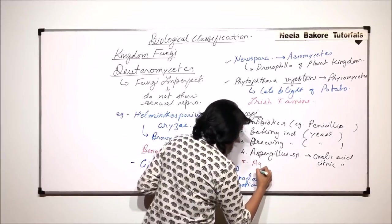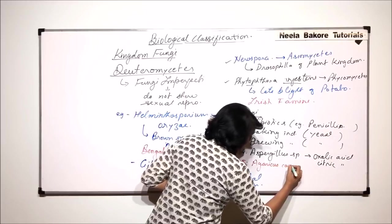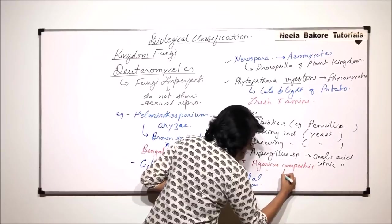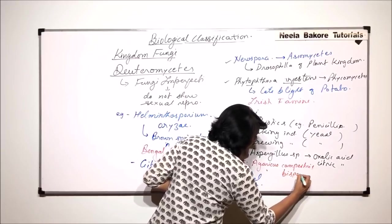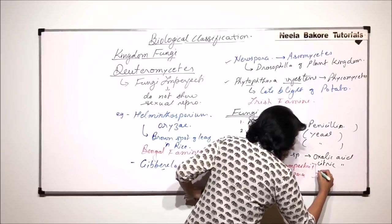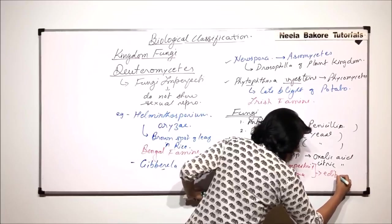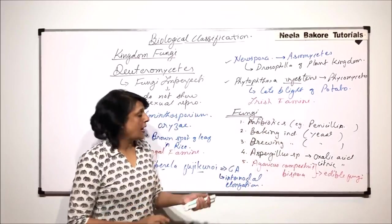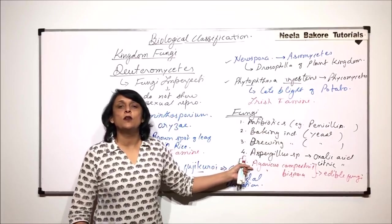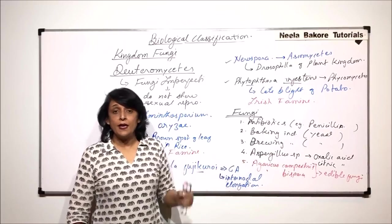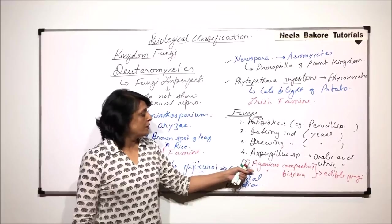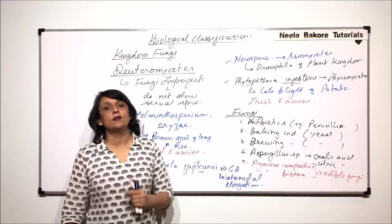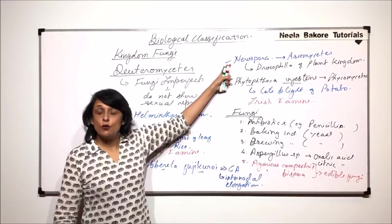For example, Agaricus campestris and Agaricus bisporus. These are the edible fungi which we commonly call the mushroom. This is very good because the nutritive value and the mineral content is very high. So fungi are used for various important things including Neurospora, which is used for genetic research work.